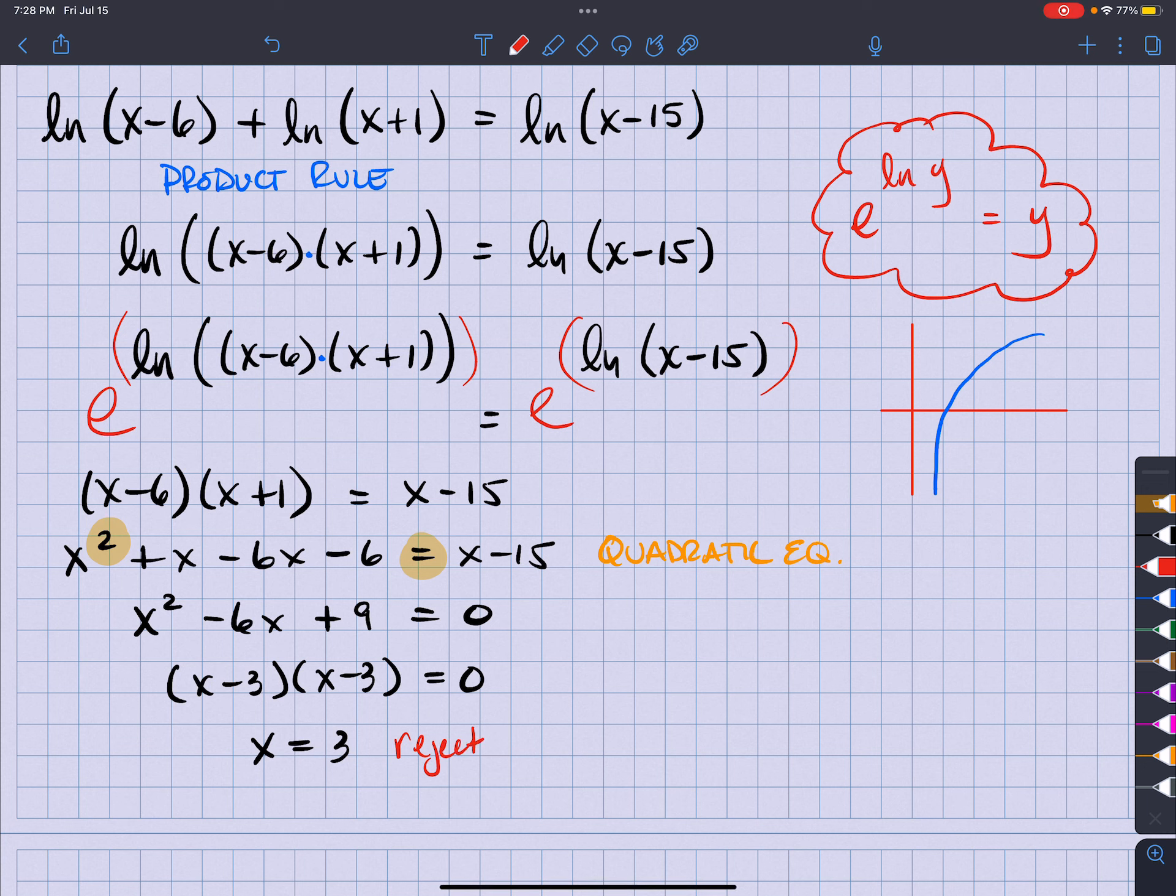So I'm going to have to reject this. And I'm going to go ahead and write an explanation here. Since natural log of negative 3 and the natural log of negative 9 does not exist. So with that being said, I have no solution.